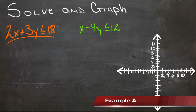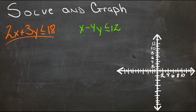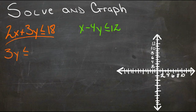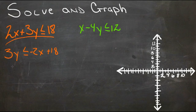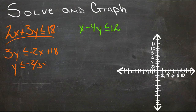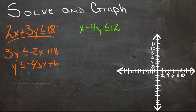For the first inequality, subtract 2x from both sides to get 3y ≤ -2x + 18, then divide both sides by 3 to get y ≤ -2/3x + 6.